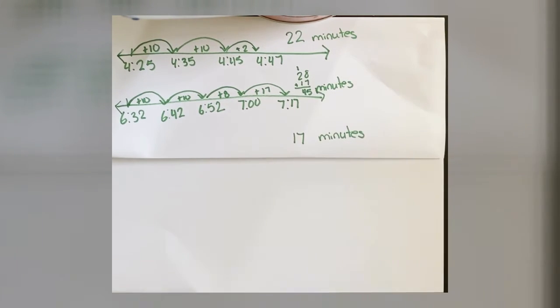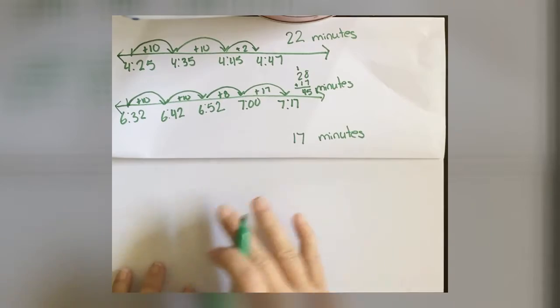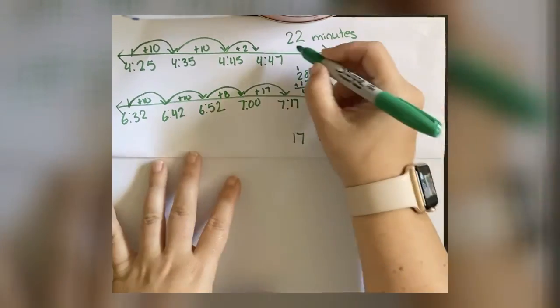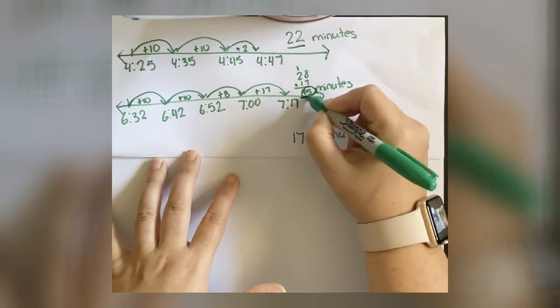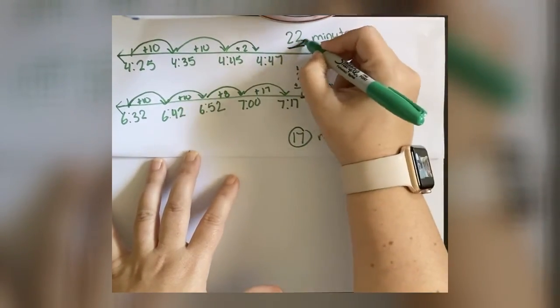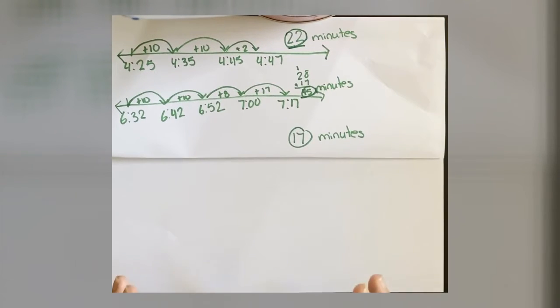Okay, so now that we know that I read 22 minutes the first time, 45 minutes the second time, and 17 minutes the last time, we need to put them all together to see how much I read all together. Because remember, my goal was to read for one hour. So when I'm looking at these three numbers here, I need to see how I can put these together, because I can't just add them. We know that when we do time, we work in increments of 60 minutes, so just adding them together is not going to work.